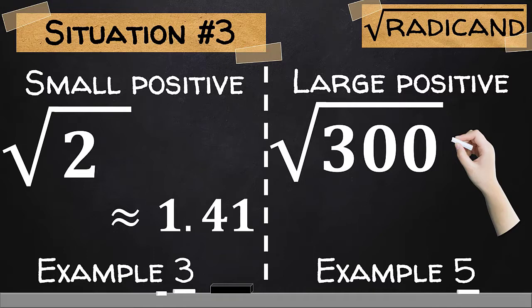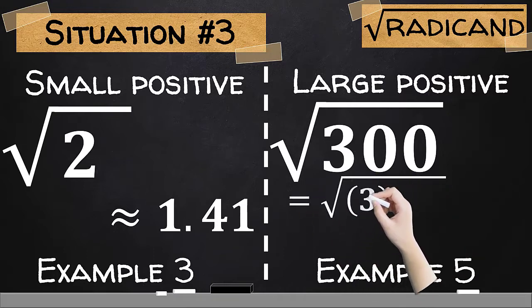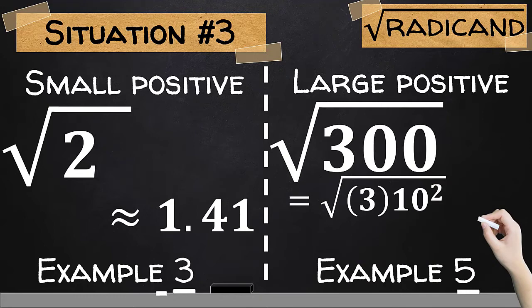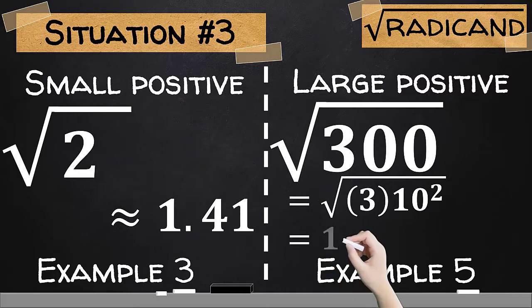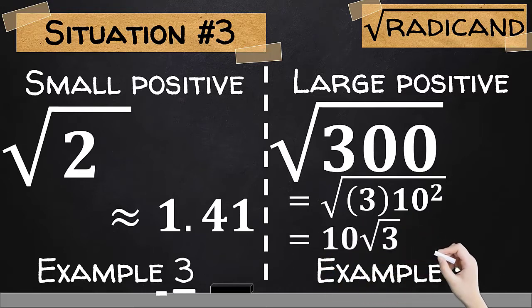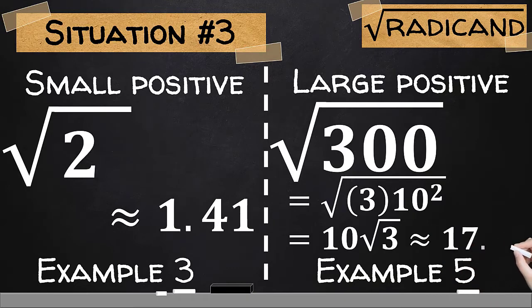We can always take its principal square root without worries since our radicand is positive. Now, you may actually simplify it like it's a product of 3 times 10 squared, then move out 10. This would become 10 square root of 3. This is already a real number. Or if you would like to, you could also approximate it into 17.32 rounded off into two decimal places.